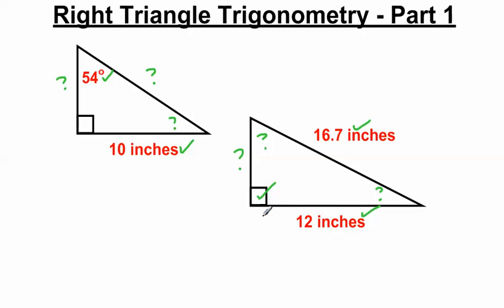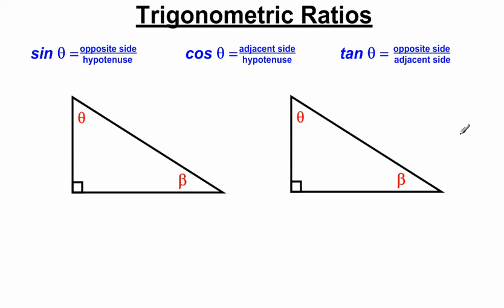I like trigonometry because it's more versatile than the Pythagorean theorem and special right triangles. So let's jump into the concept of trigonometry. There are three trigonometric ratios that I'm going to talk about in these lessons. One is called sine of an angle, which is equal to the opposite side over the hypotenuse. Another is cosine of an angle, equal to the adjacent side over the hypotenuse. And the last is tangent of an angle, equal to the opposite side over the adjacent side.